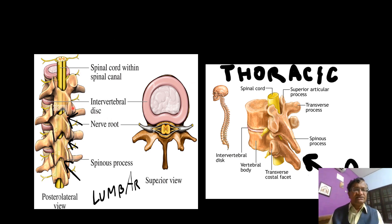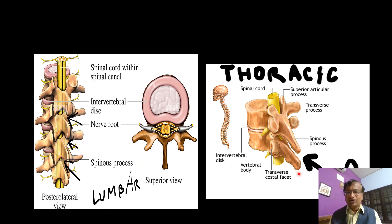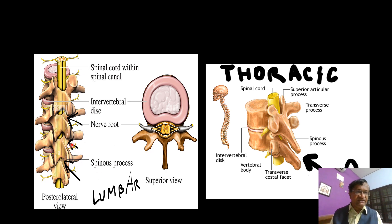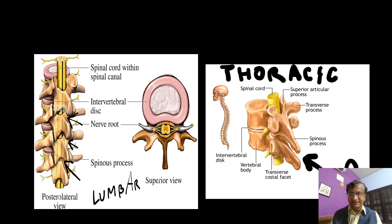In the lumbar region the spinous processes allow a clear intraspinous gap, whereas in the thoracic, the spines are angled and overlapping, necessitating the paramedian approach. The intraspinous gap is less in the thoracic. Interlaminar is different from intraspinous — there is a clear intraspinous gap in lumbar but it is less in the thoracic.